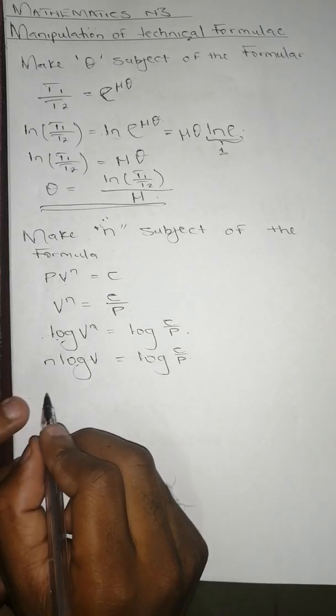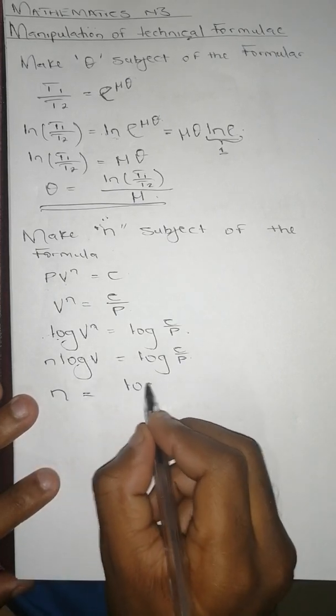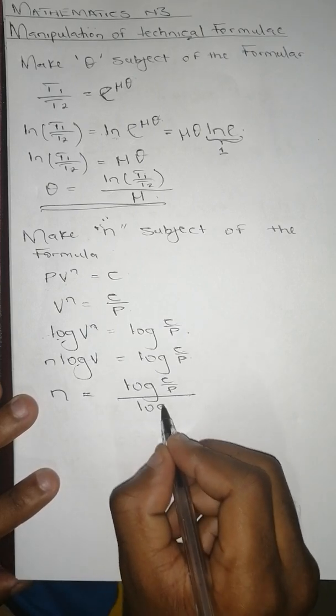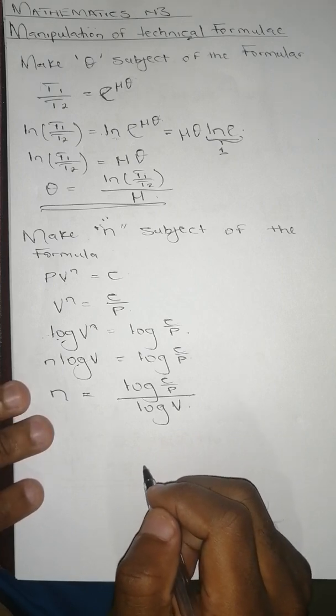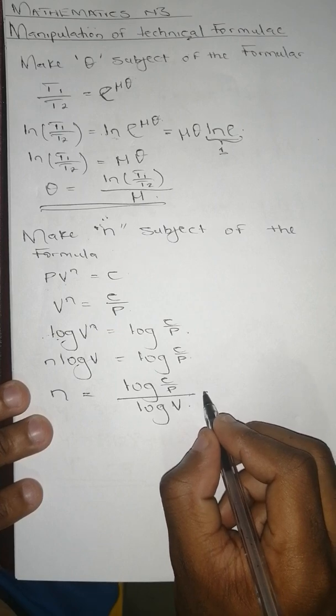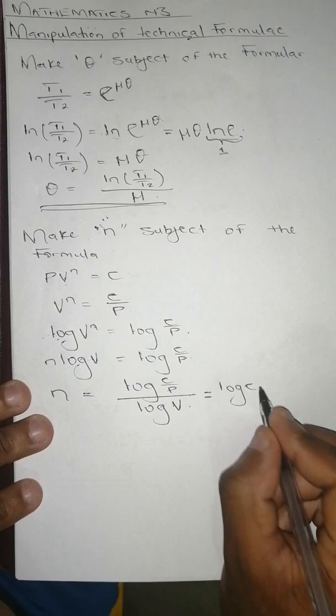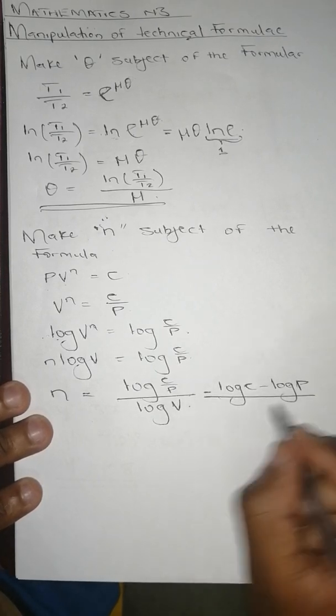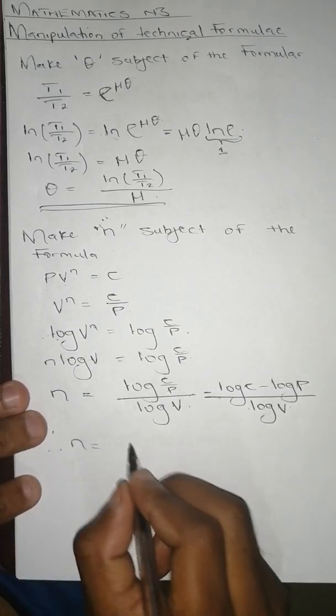Divide both sides by log(V) so that we are left with n. So it's going to be n equals to log(C/P) all over log(V). Using log rules, this can be written as log(C) minus log(P) all over log(V). Therefore n equals to log(C) minus log(P) over log(V).